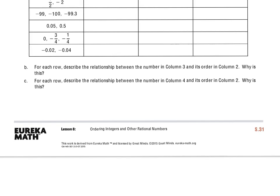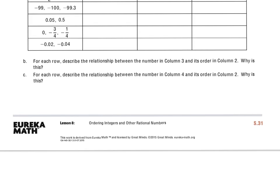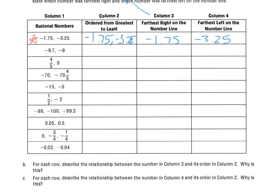But I want to discuss B down here. B says, for each row, describe the relationship between the number in column 3 and its order in column 2. Why is this? So we know in column 3, we're talking about farthest right on the number line. And I can see that my number here, for my example, is showing up as the greatest number.